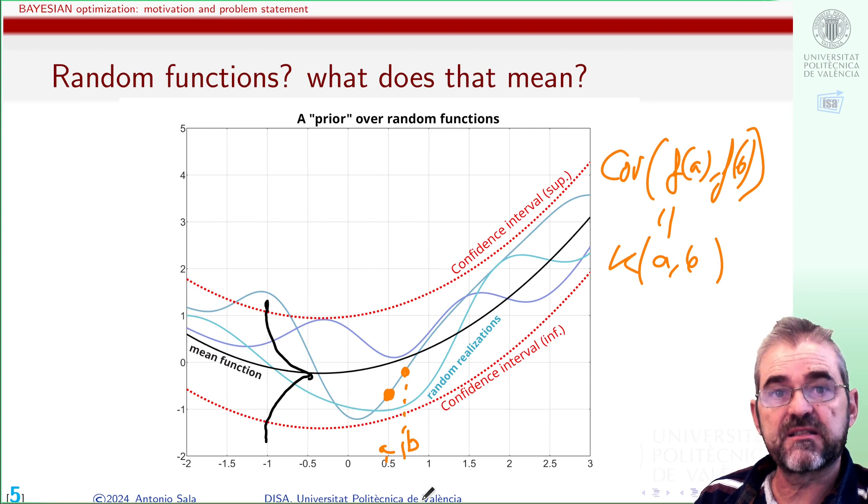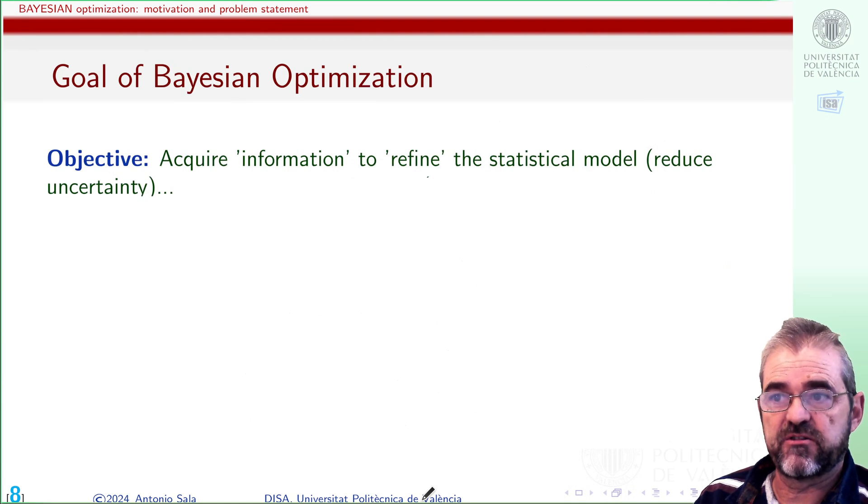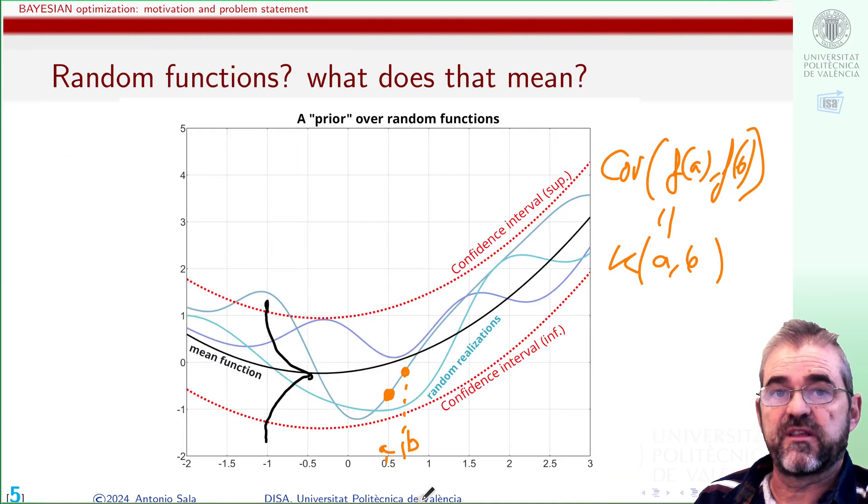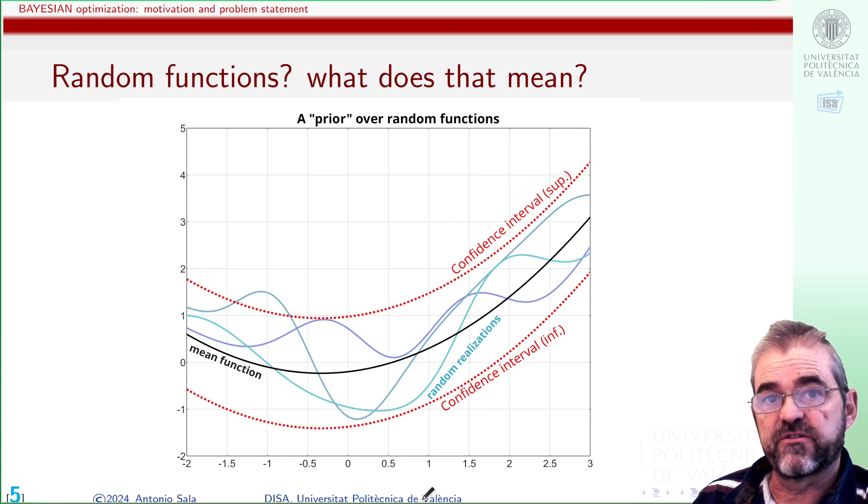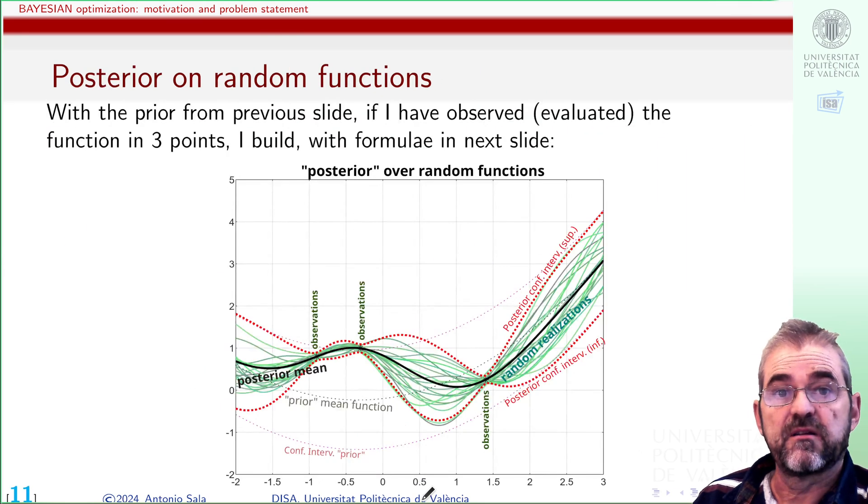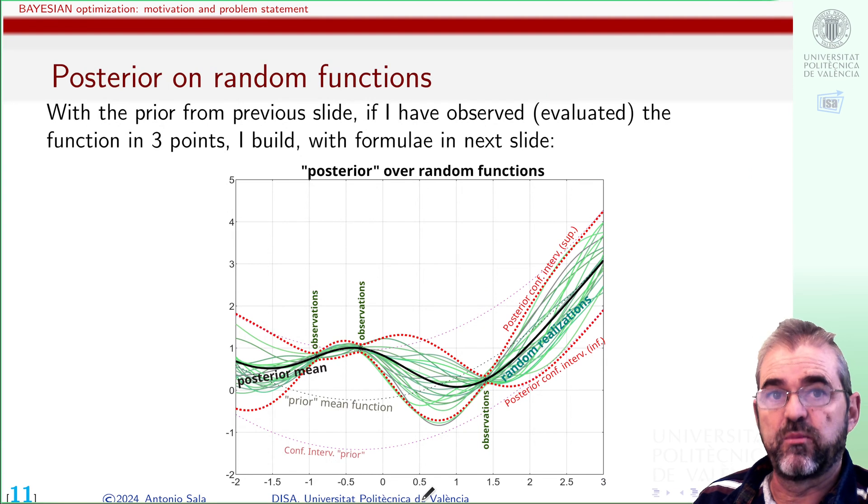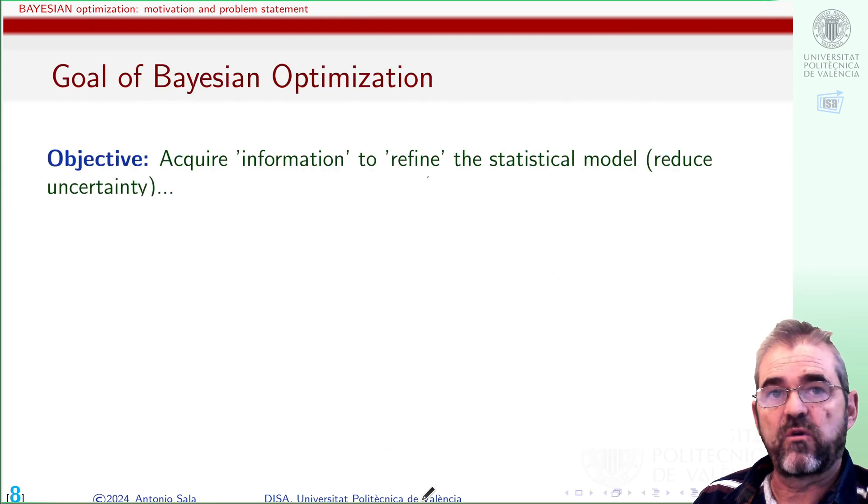So we now can state the main goal of Bayesian optimization and it is to acquire information to reduce the uncertainty so that well this was my prior thought on what the function is and then after acquiring some samples my uncertainty is reduced close to the sample points. So acquire information to reduce uncertainty, this is kind of an identification problem and it's somehow the goal of Bayesian optimization.